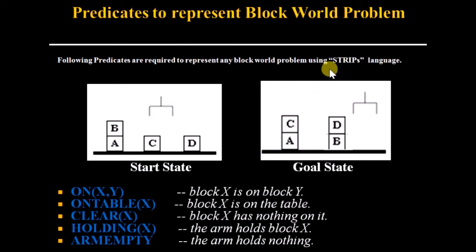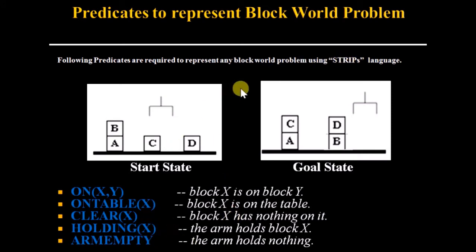We will represent the problem using STRIPS language. STRIPS language means only predicates will be present — there will be no negative predicates, and we will keep all the predicates in conjunction form.